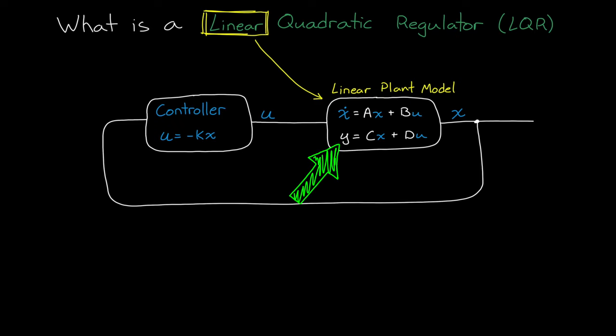Since the output y is just the full state of the system x, and so this means that C is an identity matrix and D is zero. So they're not really important for this controller. All right, so that's the first part. We need linear state space equations and specifically the A and B matrices.